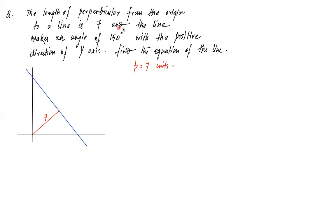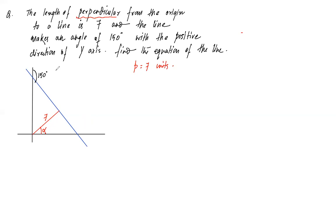The requirement is alpha, not the inclination theta of the line. Here, 150° is the angle the straight line makes with the y-axis — not alpha. Plotting the diagram: the angle the line makes with the y-axis is 150°. Since a straight line has 180° total, the supplementary angle on the other side of the y-axis is 180° − 150° = 30°. We now have 30° inside the figure.